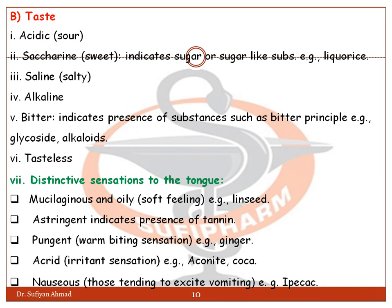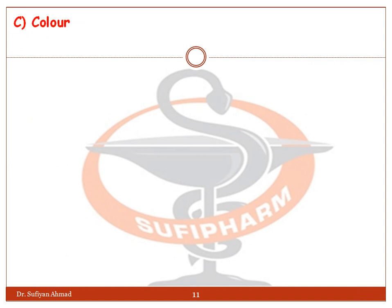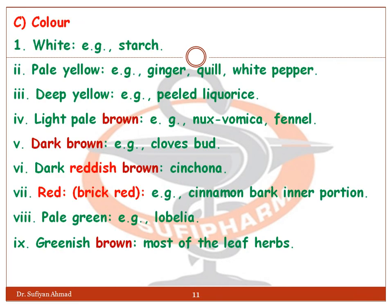Astringent taste indicates the presence of tannins. Pungent gives a warm and burning sensation, for example ginger. Irritant gives an acrid irritant sensation, for example aconite and coca. Nauseous is another category. Color: white — example starch; pale yellow — example ginger quill; white to deep yellow — example peeled licorice; light pale brown — example fennel.